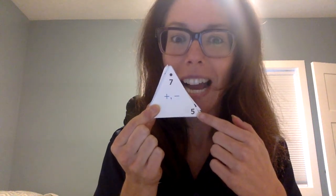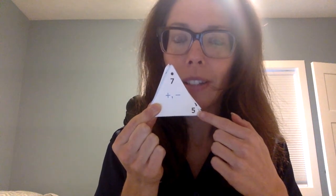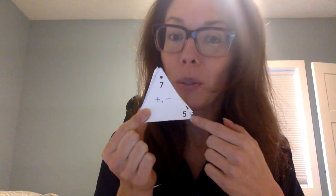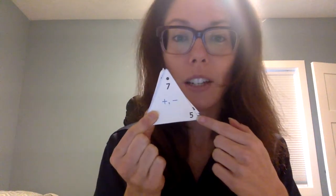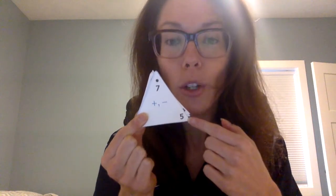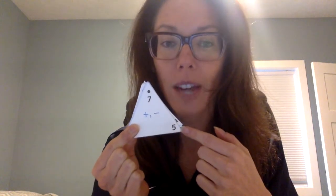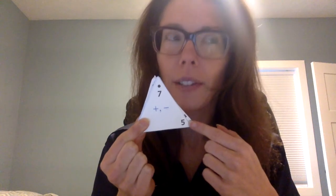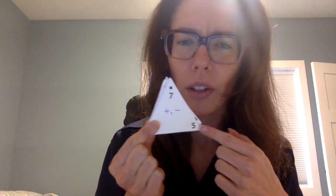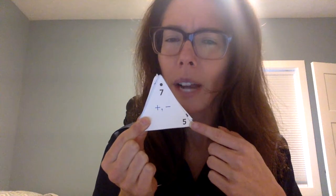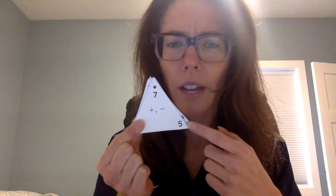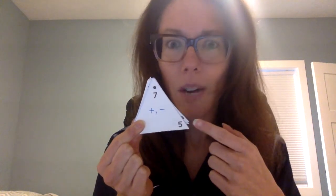7 minus 5 — and this is what I want you to do when you're practicing your fact triangles. I want you to work on different subtraction strategies. 7 minus 5. Those numbers that I'm subtracting are really close together. 5 to 7, I can count up.